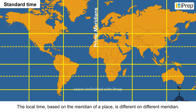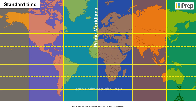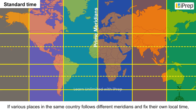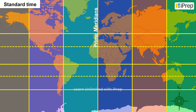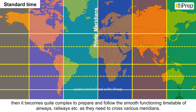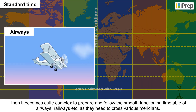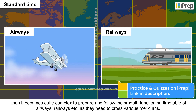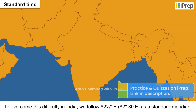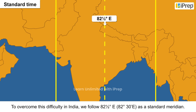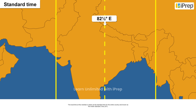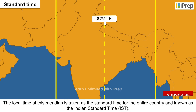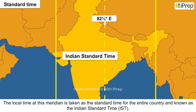Standard Time: The local time, based on the meridian of a place, is different on different meridians. If various places in the same country follow different meridians and fix their own local time, it becomes quite complex to prepare and follow a smooth functioning timetable for airways, railways, etc., as they need to cross various meridians. To overcome this difficulty, in India we follow 82.5 degrees east (82 degrees 30 minutes) as the standard meridian. The local time at this meridian is taken as the standard time for the entire country, known as Indian Standard Time, i.e., IST.